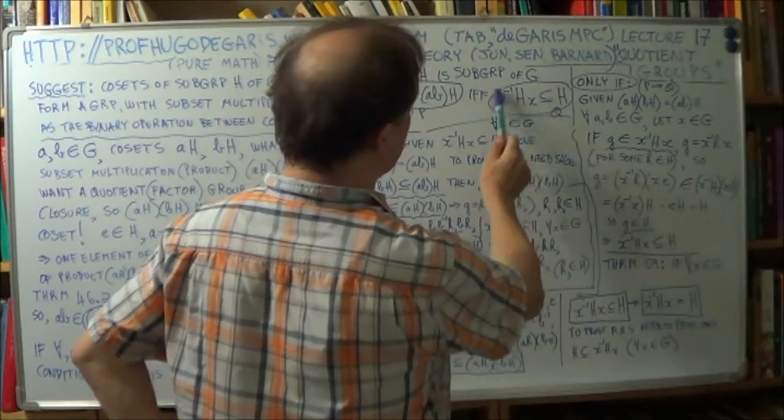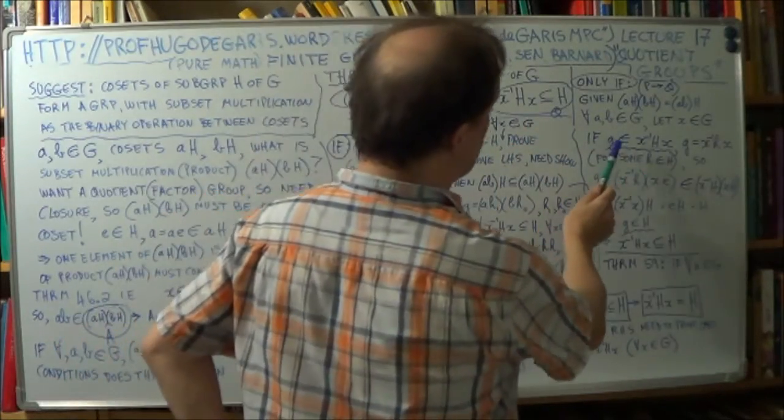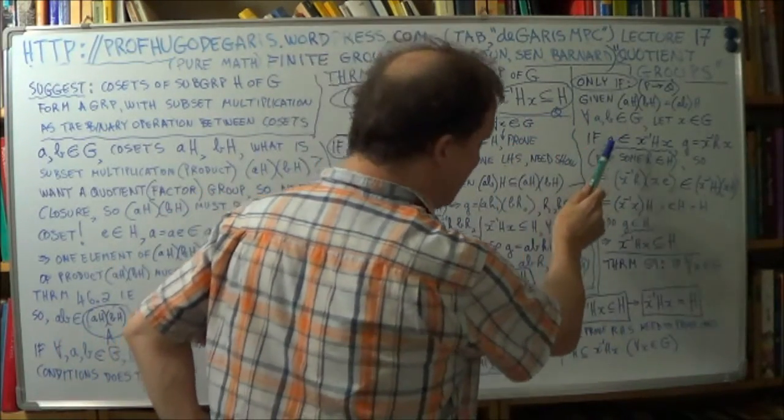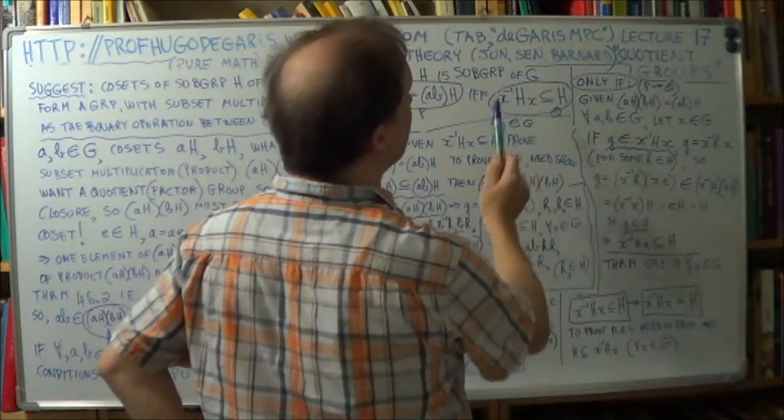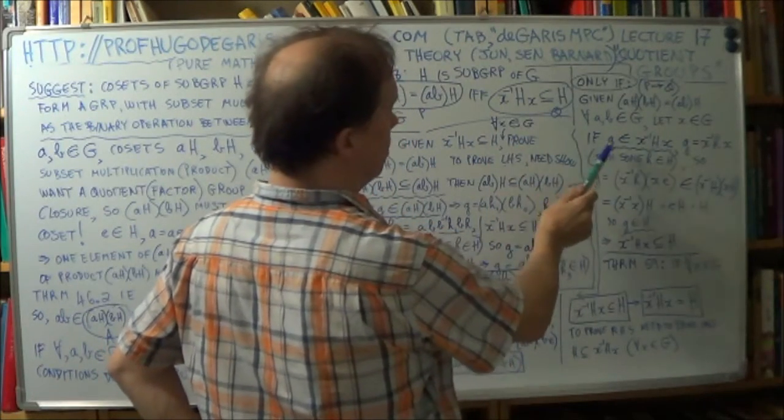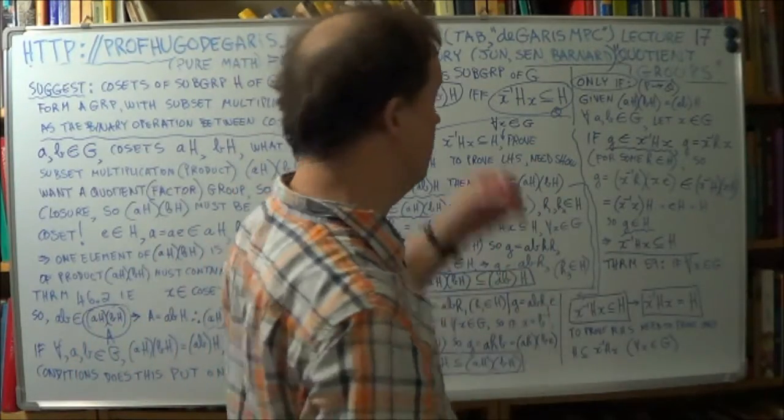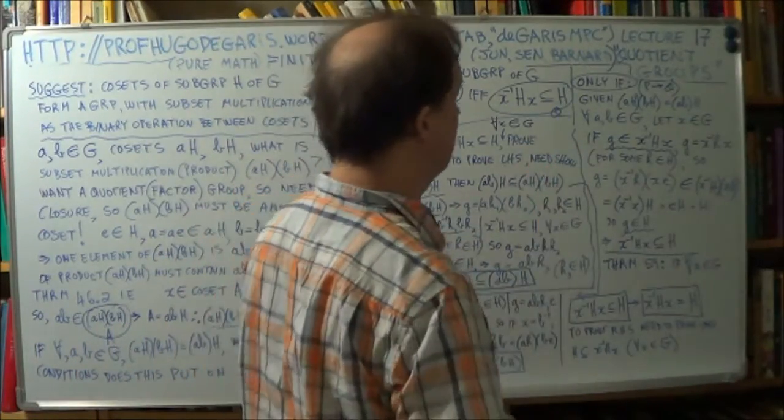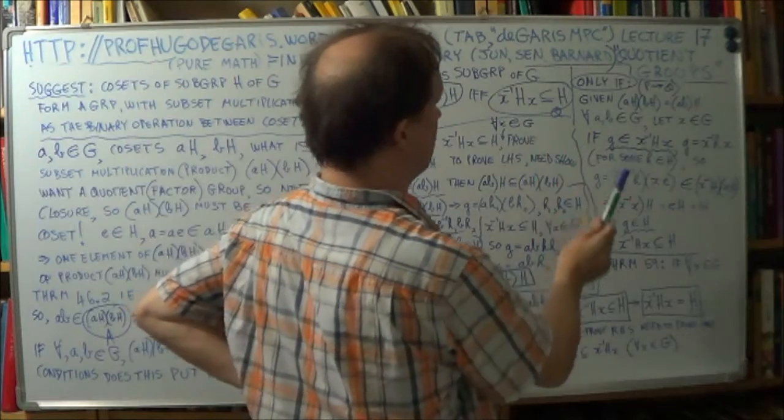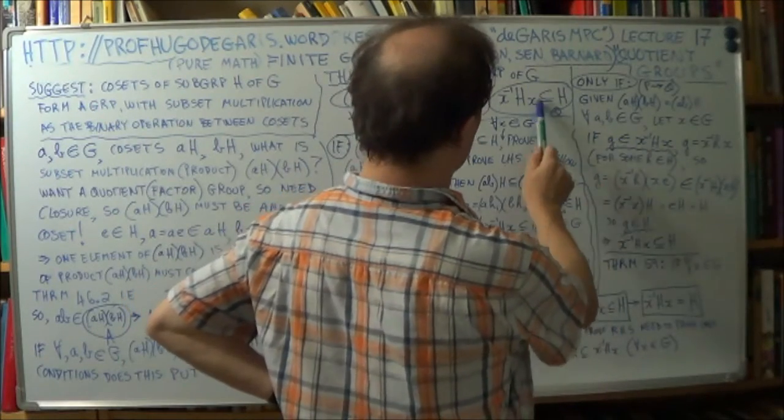So let X belong to this. And then we'll try to show that G, sorry, let little g belong to this. And then we'll try to show that little g, therefore, also belongs to that. And that's the definition of a subgroup. So hence we'll get that. So let's try a strategy. Okay.